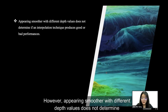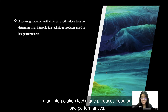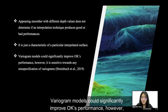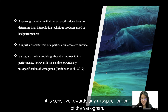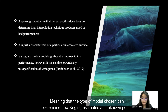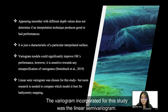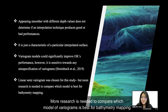However, appearing smoother with different depth values does not determine whether the interpolation technique produces good or bad performance — it is just a characteristic of a particular interpolation surface. Variogram models could significantly improve Kriging's performance; however, it is sensitive to any misspecification of the variogram, meaning that the type of model chosen can determine how Kriging estimates an unknown point. The variogram incorporated for this study was a linear semi-variogram, and more research is needed to compare which variogram model is best for bathymetric mapping.